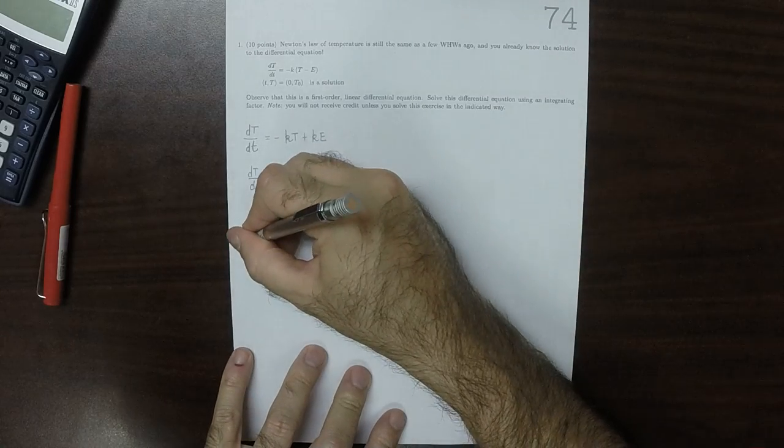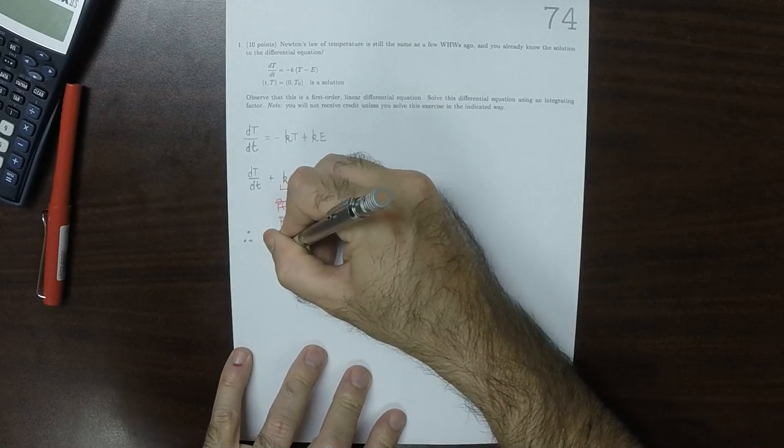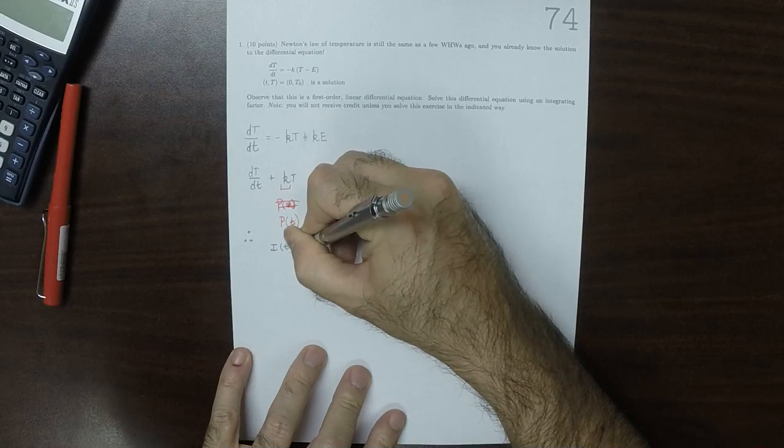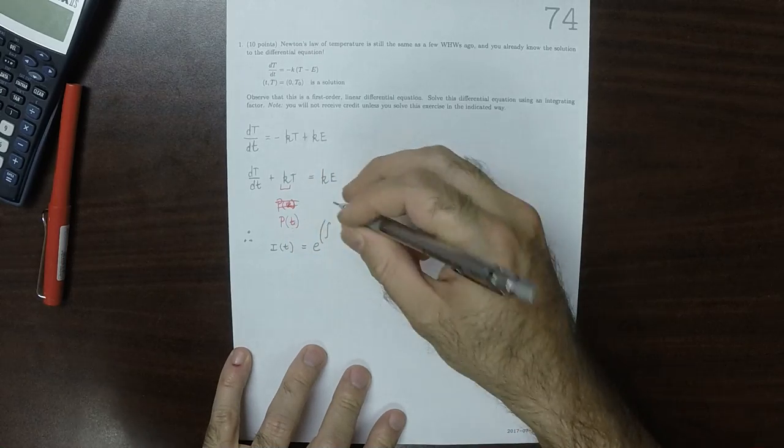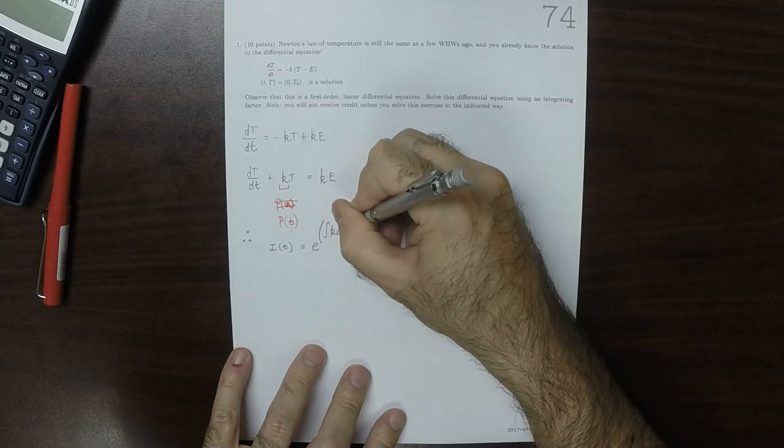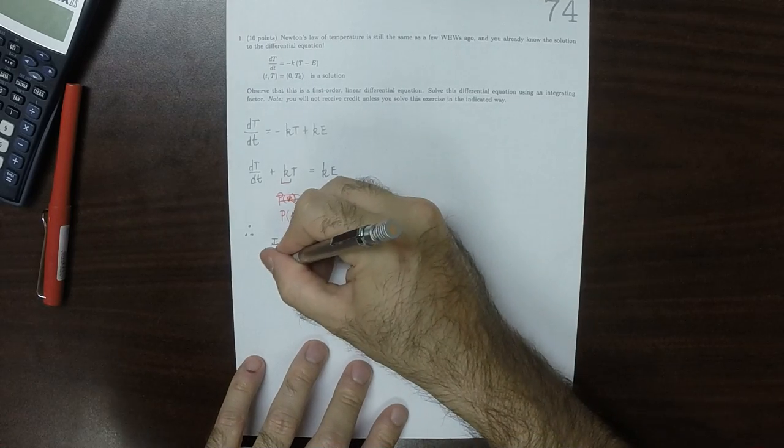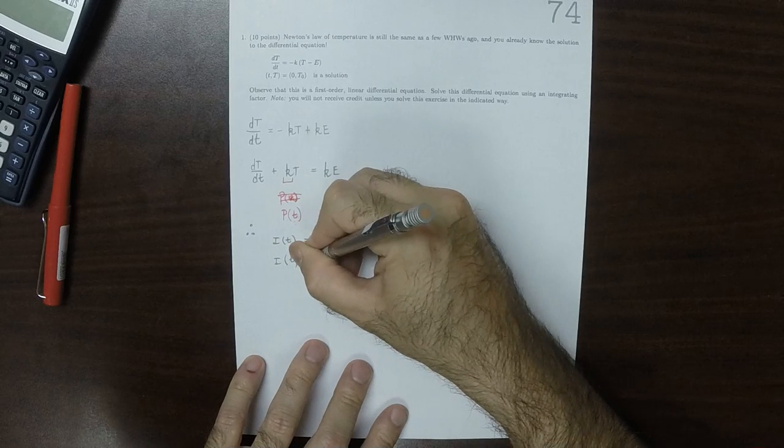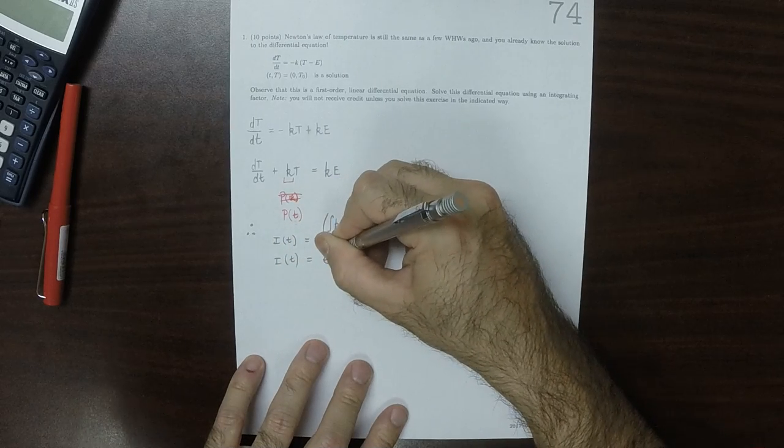And therefore the integrating factor I of T is the exponential of the anti-derivative of K DT, so the integrating factor is exponential of K T.